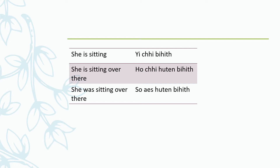For 'she was sitting over there', you use so: so us hu ten behit. Or 'she was telling me something': so us me vanan. 'She was saying': so us dapan. 'She was playing': so us kindan.